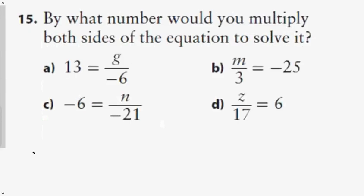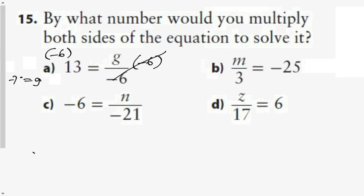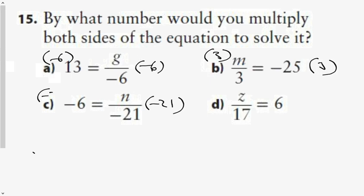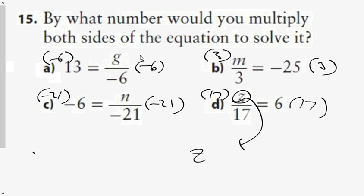Question 15 has fractional coefficients. For a, multiply both sides by negative 6. For b, multiply both sides by 3. For c, multiply both sides by negative 21. And finally, multiply both sides by 17. Notice when writing Z, put a line through it to differentiate it from the number 2.